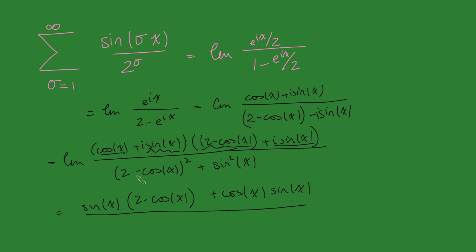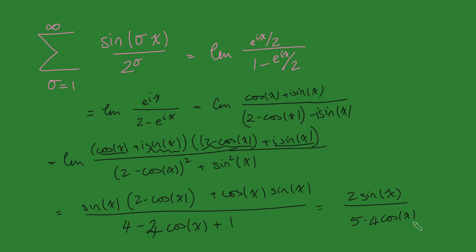All of that divided by the denominator, which expands to 4 minus 4 cos x, plus cos squared x plus sine squared x, which gives plus 1. On the top, I get 2 sine x, then minus sine x cos x plus sine x cos x, which simplifies nicely to just 2 sine x. On the bottom, I've simply got 5 minus 4 cos x. So the sum from sigma equals 1 to infinity of sine of sigma x over 2 to the sigma equals 2 sine x divided by 5 minus 4 cos x.